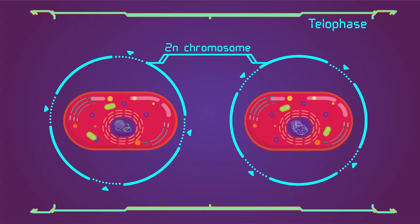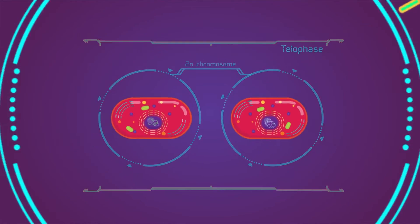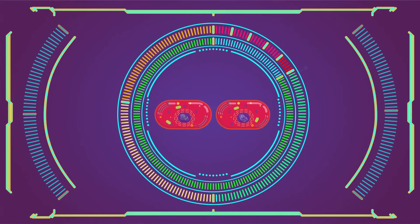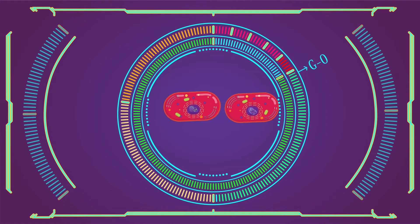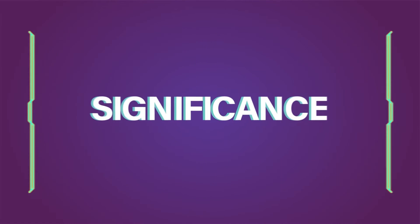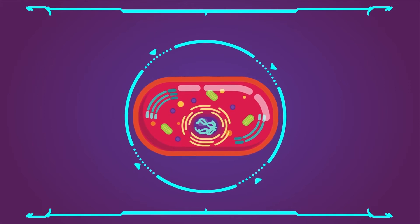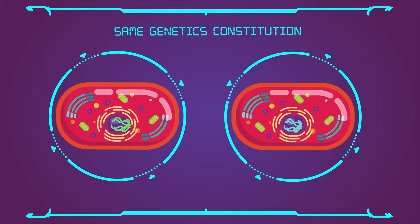Up till now we have discussed what is mitosis and its different phases. Now it's important to know about significance of mitosis. Significance: it is an equational division through which identical daughter cells are produced having the same amount and type of genetic constitution as that of the parent cell.